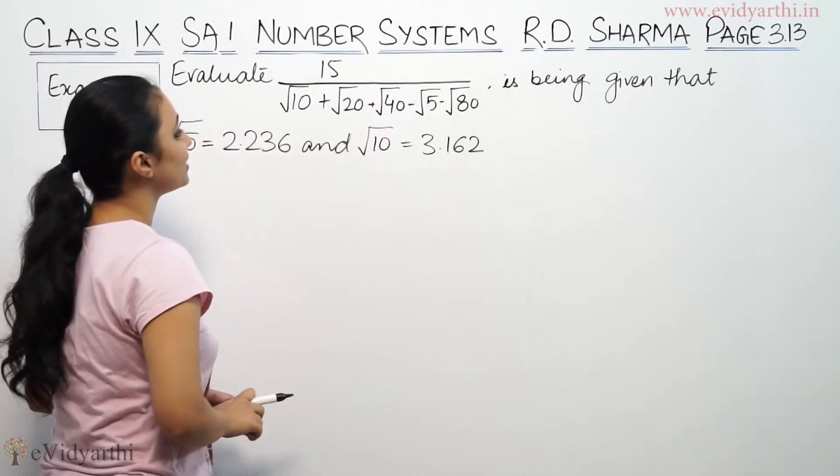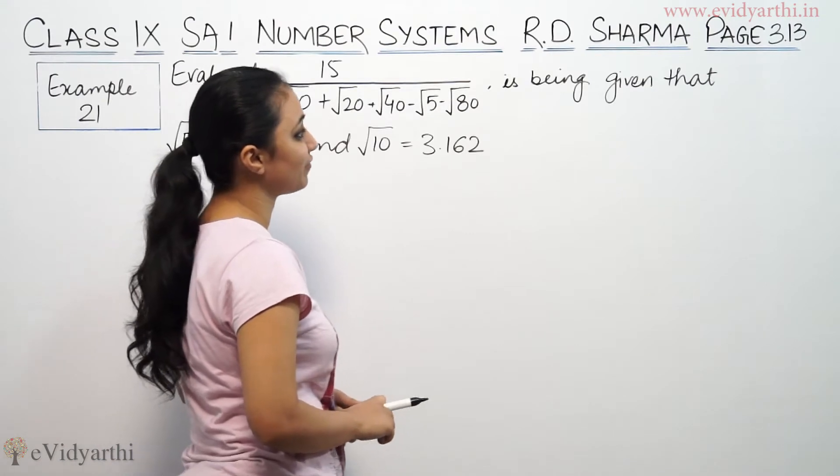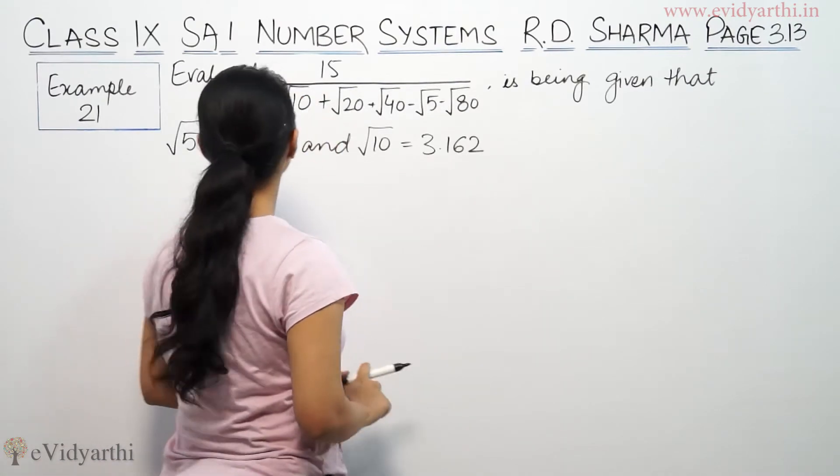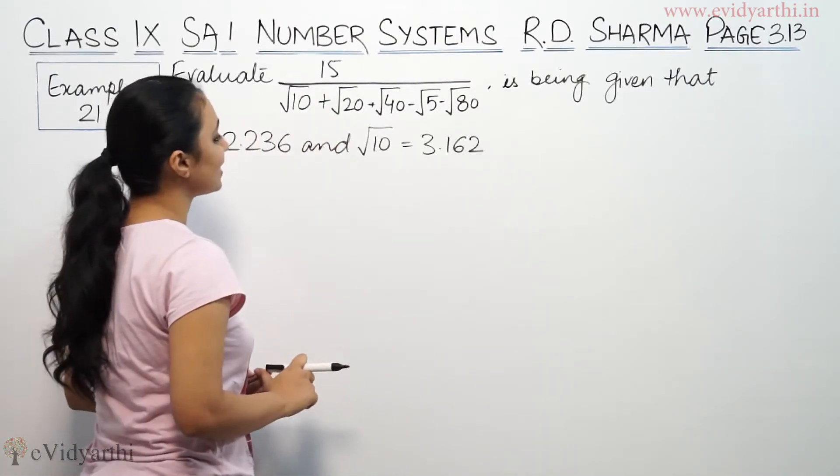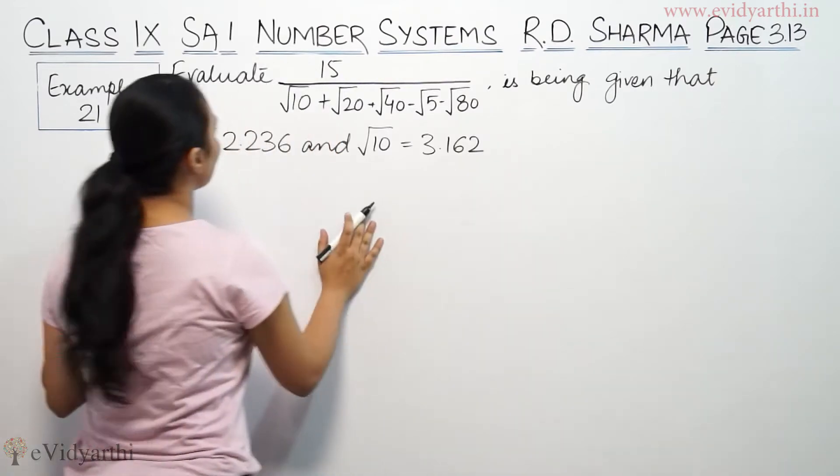The question says evaluate 15 upon root 10 plus root 20 plus root 40 minus root 5 minus root 80, being given that root 5 is 2.236 and root 10 is 3.162. So we have this given.